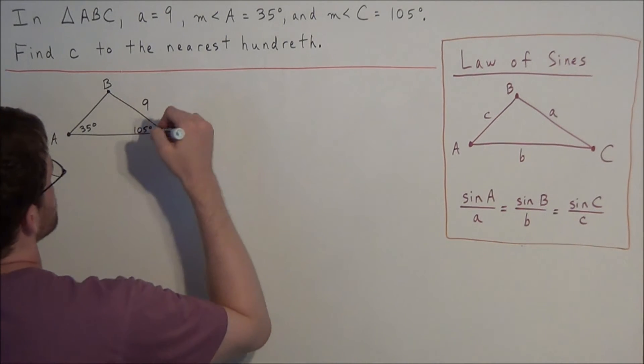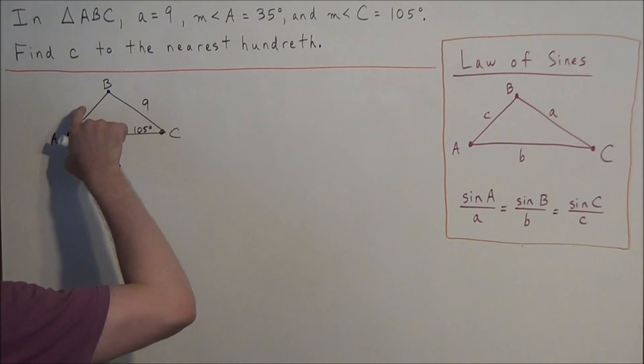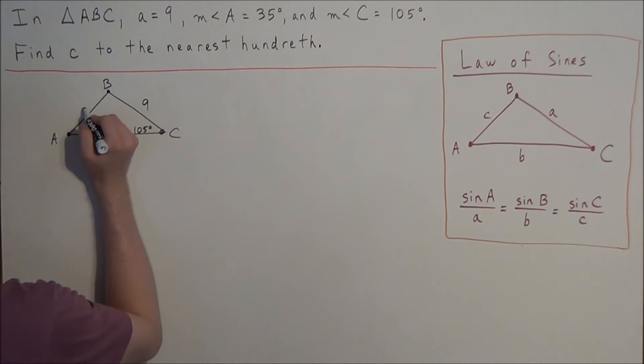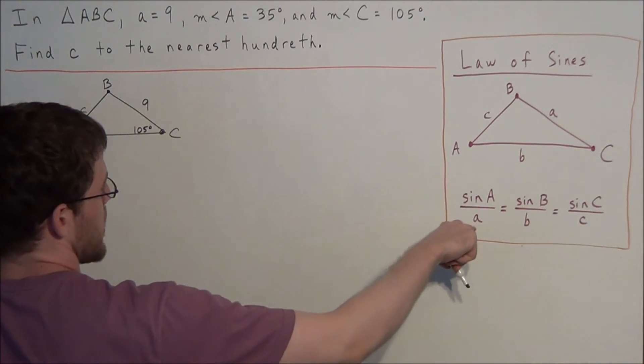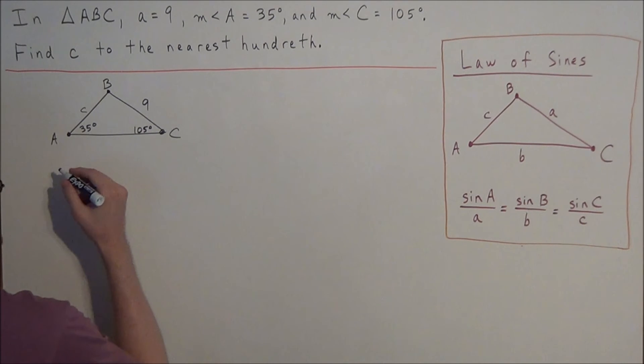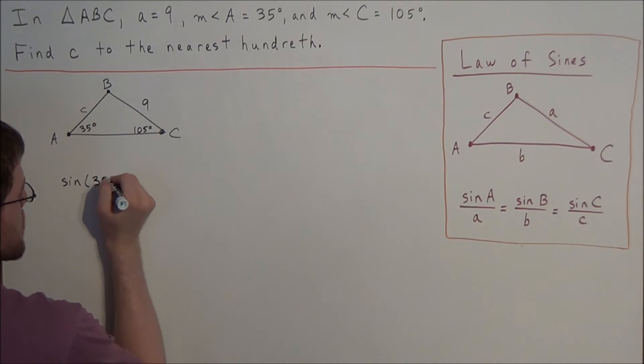So now we need to use this information to find the length of side c. So what we're going to use is the law of sines. We're going to use sine A over a. So we have the sine of angle A is 35 degrees, so we have sine of 35 degrees over 9. This is our first ratio.